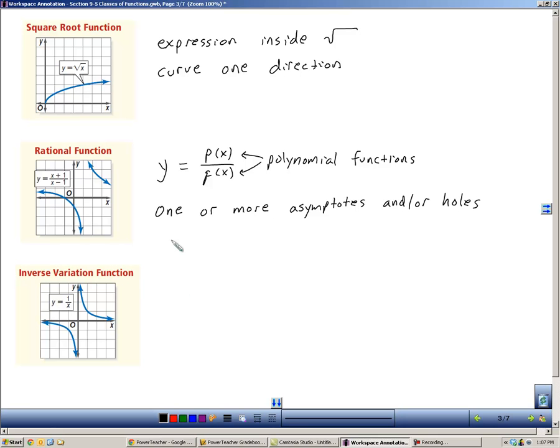And then the last function is the inverse variation function. The general form is y equals a over x, where a is a special constant. And this really is just a special rational function where the polynomial function on the top is just a constant, in this case an a. And it's always going to have two asymptotes: one at x equals zero and one at y equals zero.